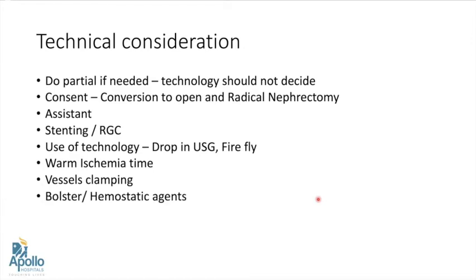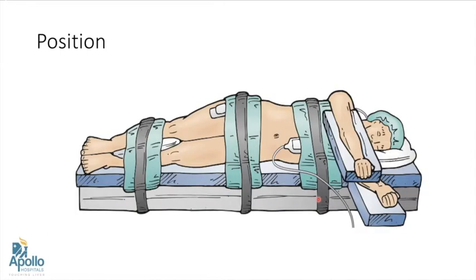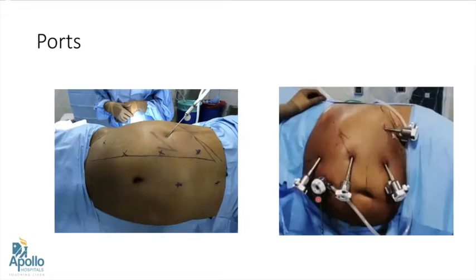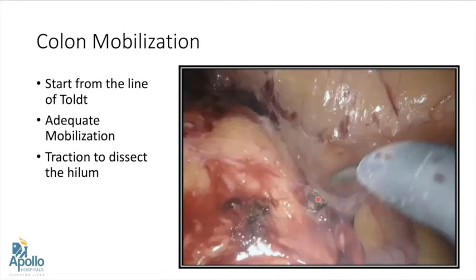I usually don't use any bolster or hemostatic agent for the last three years. My preferred sutures are 2-0 Stratafix for the inner layer and 2-0 V-lock suture for the outer renorrhaphy, done as a continuous suture. Patients are placed in flank position without any bolster. Currently using the XA robot, I prefer inline port placement, though it depends on the system being used.